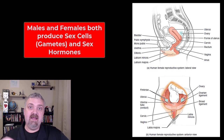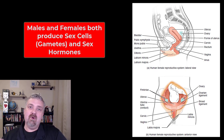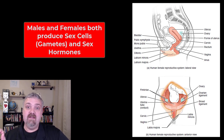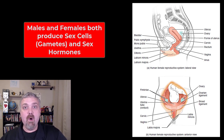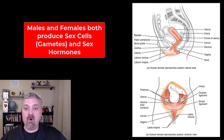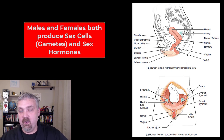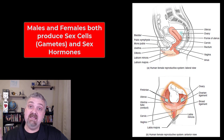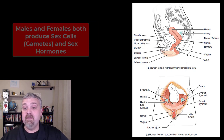In the man, the gamete is a spermatozoa, and the primary reproductive hormone is the androgen testosterone. In females, we have the female gamete, which is the oocyte or the egg, and our female reproductive hormones, which are primarily estrogen and progesterone. There are more hormones here, and the balance and timing of those two is critically important. Timing is going to be a very big deal with the female reproductive system.